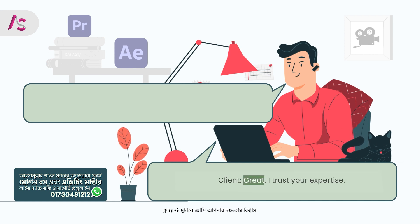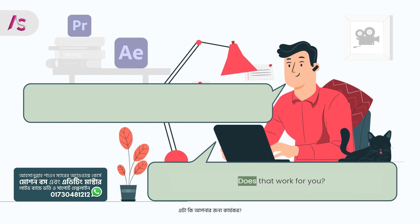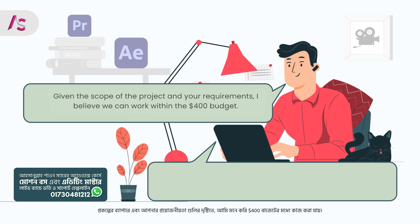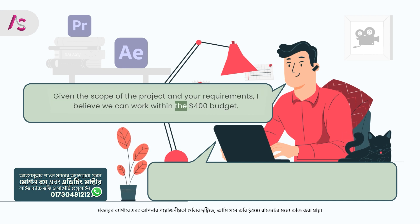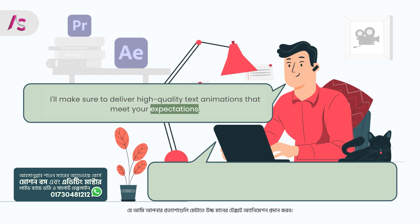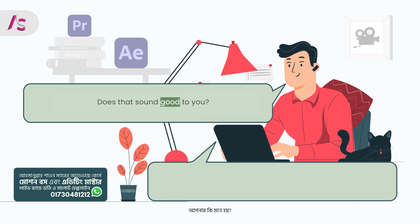Client: Great, I trust your expertise. As for the budget, $400 is the maximum I can allocate for this project. Does that work for you? Freelancer: I appreciate your budget consideration. Given the scope of the project and your requirements, I believe we can work within the $400 budget. I'll make sure to deliver high-quality text animations that meet your expectations. I'll also provide you with drafts along the way for your feedback. Does that sound good to you?